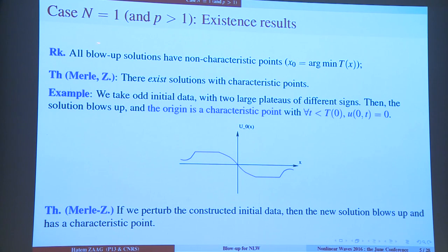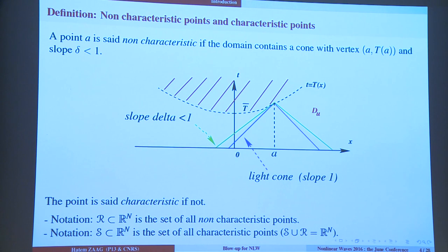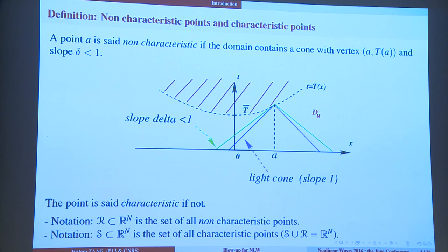Now I start with the case n equals 1. Any blow-up solution has a non-characteristic point. Why? Because you always take the minimal time — the place where you have the minimal time — and there you can have a flat cone with slope 0. I take initial data in H1-loc-uniform times L2-loc-uniform, meaning that the L2 norm on every ball of radius 1 is uniformly bounded. So you always have a solution defined in a strip, and you have a minimal time where you have a non-characteristic point.